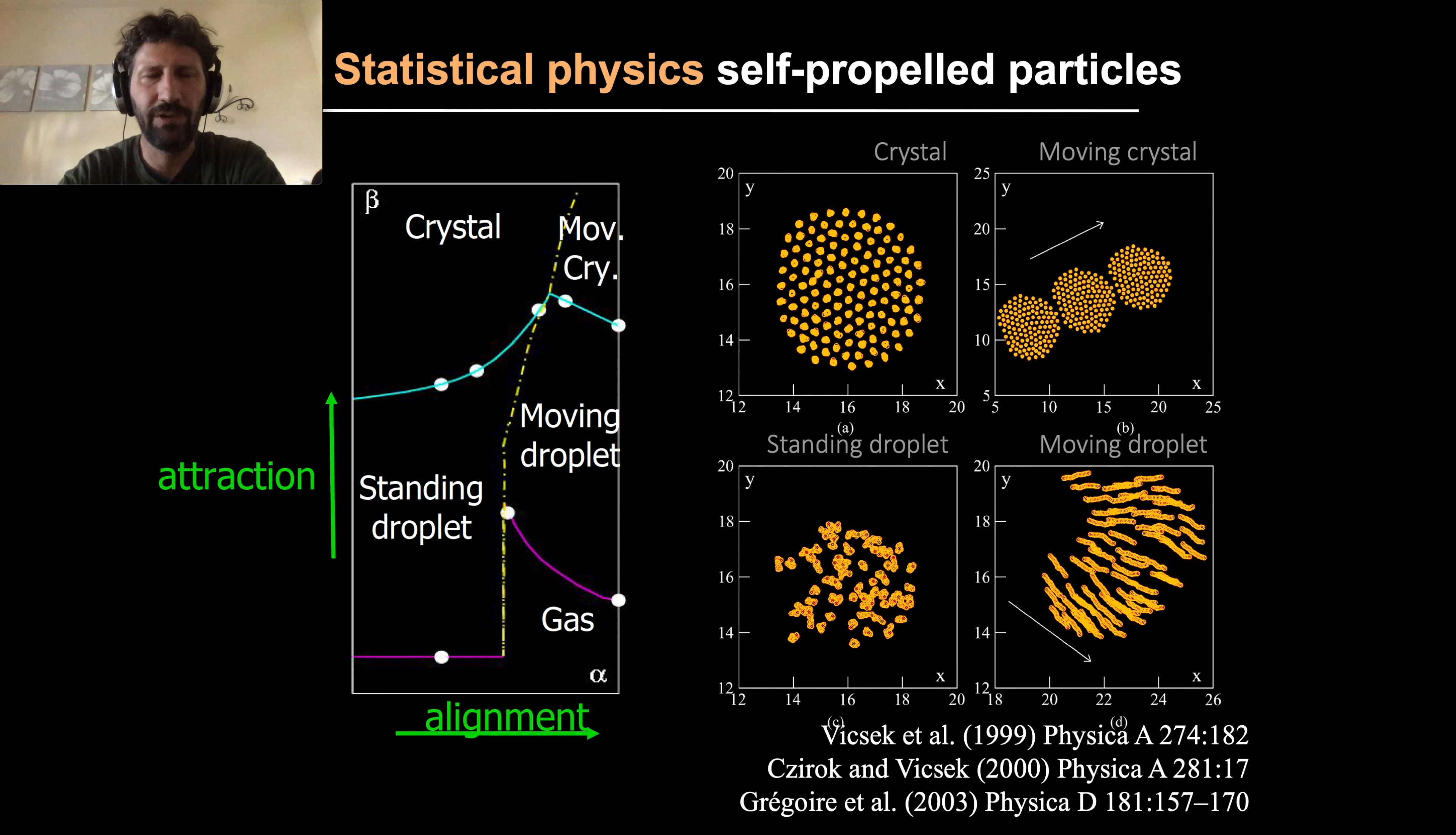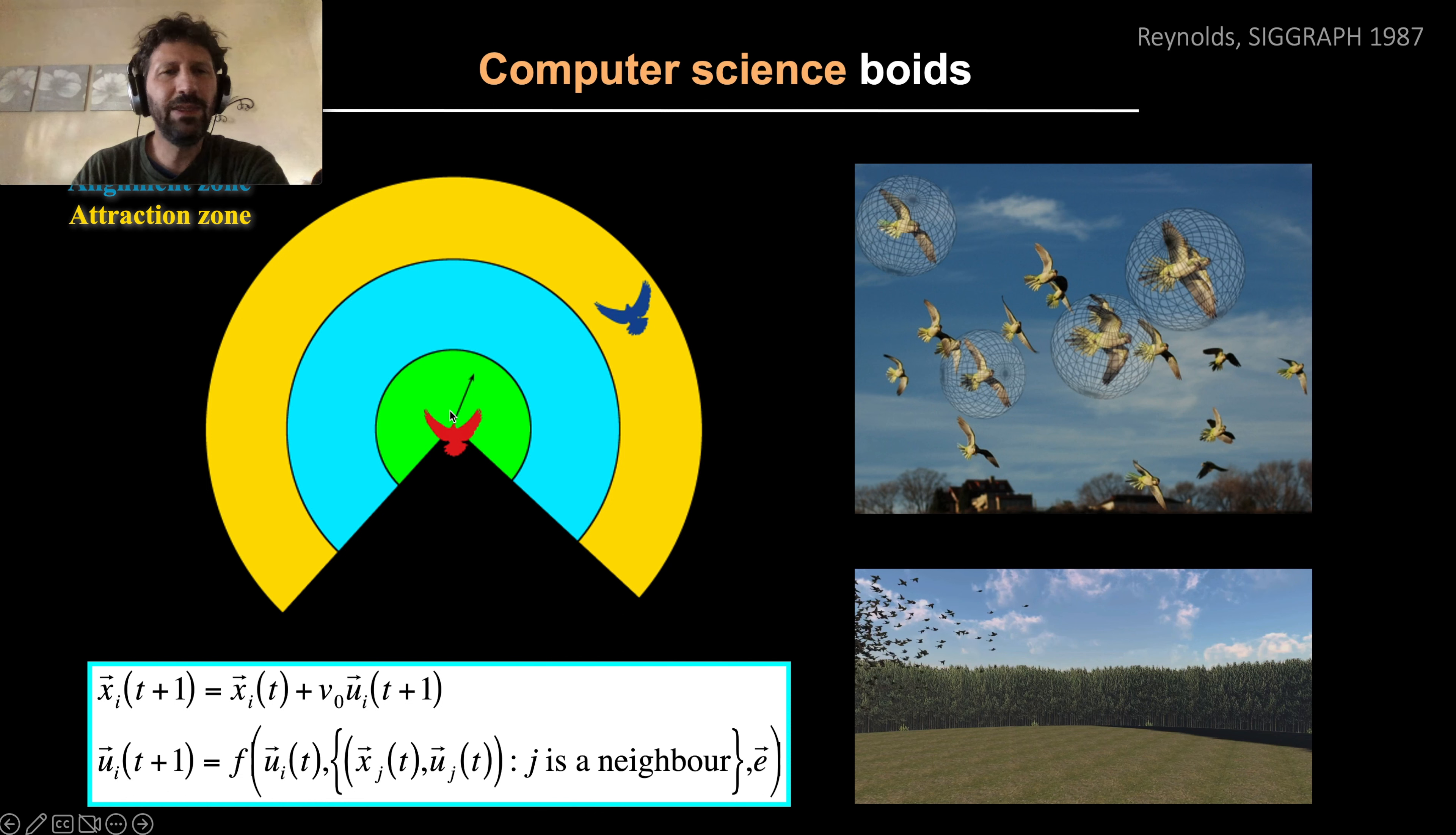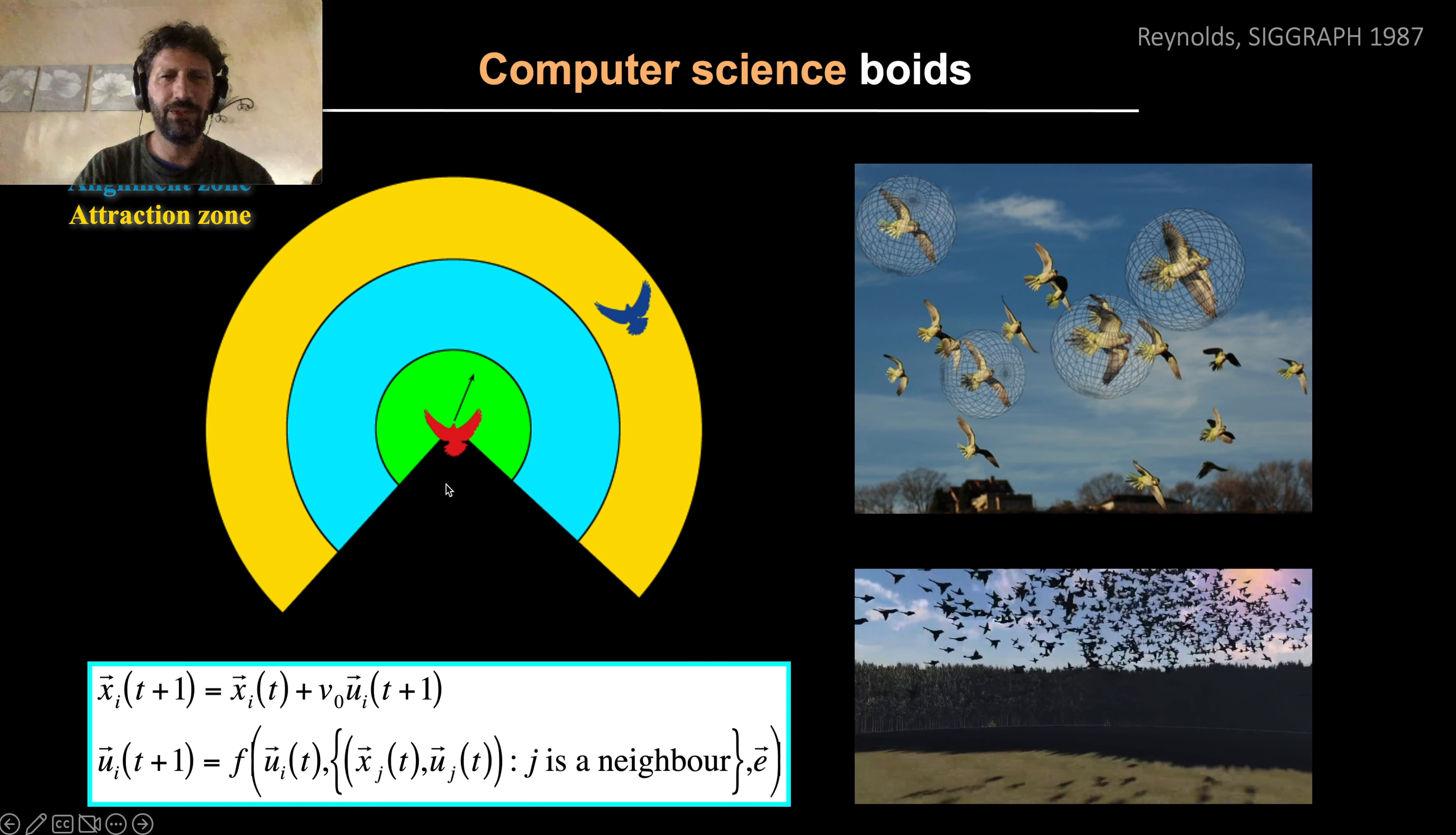The same topic has also been of interest for computer scientists who have tried to produce animations to animate characters for computer simulations, video games, and animation movies. One of the first results dates back to 1987, when Craig Reynolds proposed one of the popular models in which individuals interact with their neighbors according to simple rules. The focal individual in red will update its direction of movement, its velocity, as a function of the previous velocity and of the position and velocity of all the neighbors. In particular, the focal individual will be attracted to neighbors when they are far in the yellow zone, will try to align with neighbors in the blue zone, and will move away from neighbors in the green zone to avoid collisions.